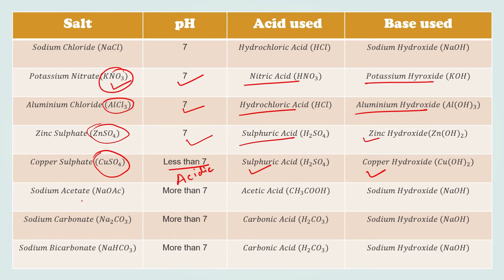For sodium acetate (NaOAc or CH3COONa), the acid used is acetic acid (CH3COOH) and the base is sodium hydroxide (NaOH). Its pH is more than 7, which means that this salt is basic.